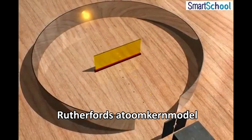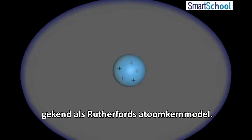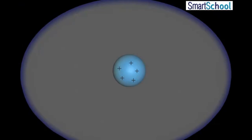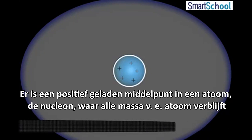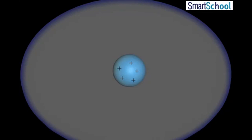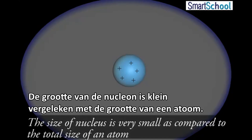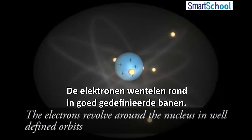Rutherford's Nuclear Model of an Atom. On the basis of scattering experiments, Rutherford put forward a model of atom known as Rutherford's nuclear model. There is a positively charged center in an atom called the Nucleus, in which all the mass of an atom resides. The size of the nucleus is very small as compared to the size of an atom. The electrons revolve around the nucleus in well-defined orbits.